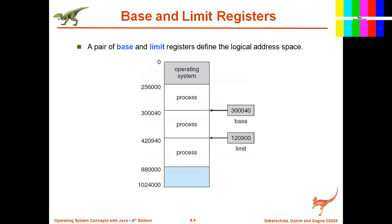This is a main memory diagram. Each process has its own memory space. Address 0 to 256,000 is reserved for the operating system — usually the OS is loaded into main memory when you switch on the computer and occupies the lower part of main memory. After the operating system, the remaining memory is used for processes. So 256,000 to 340,000 is used for process one, then process two, three, and so on.